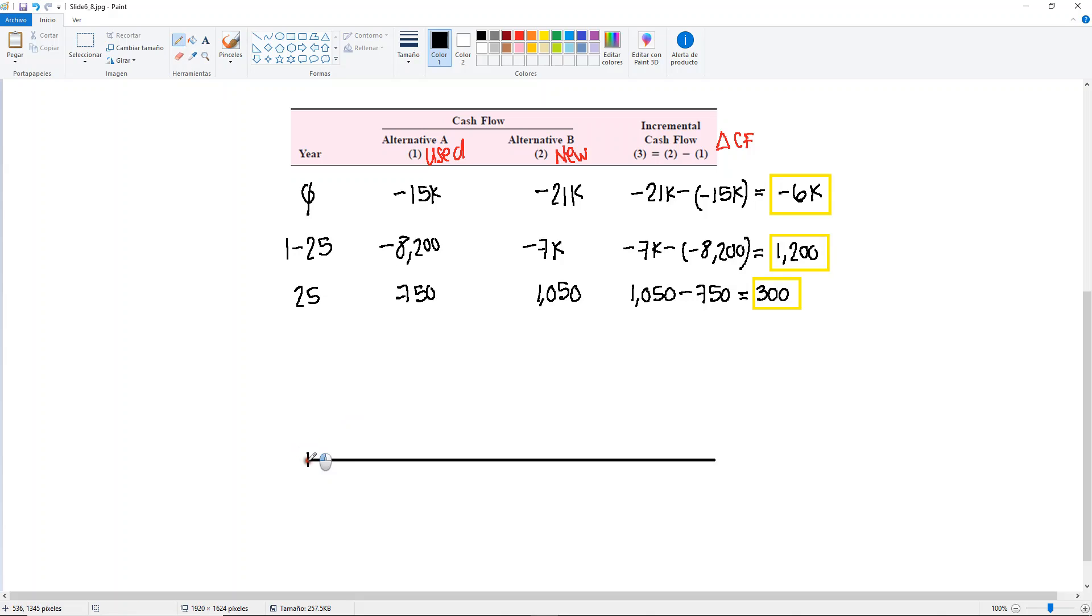So you have year 0, 1, 2, 3, 4, and then the last three years. This one right here is going to be our incremental cash flow diagram. In year 0, you would have minus 6,000. In years 1 through 25, you would have an arrow going up, the same here until year 25.